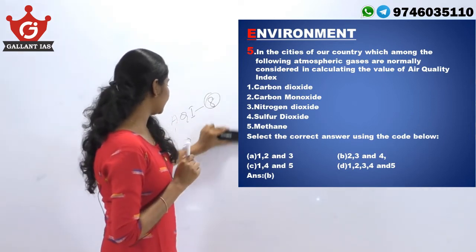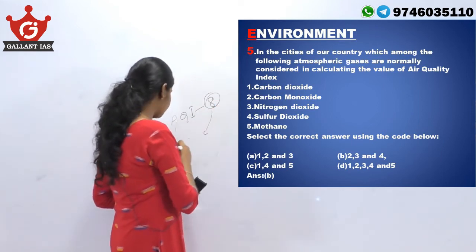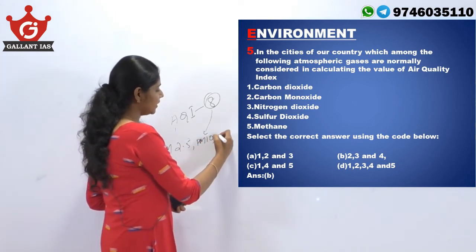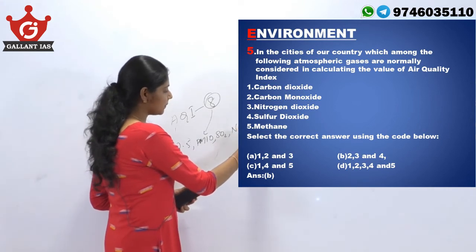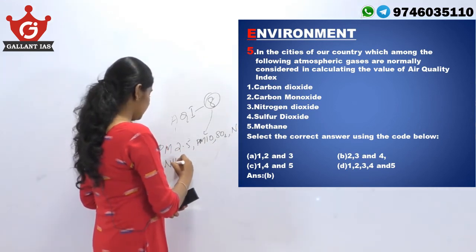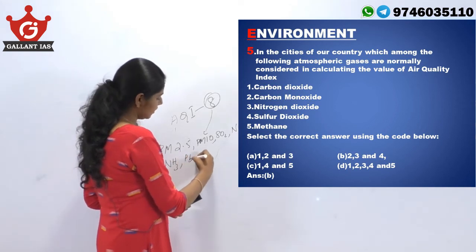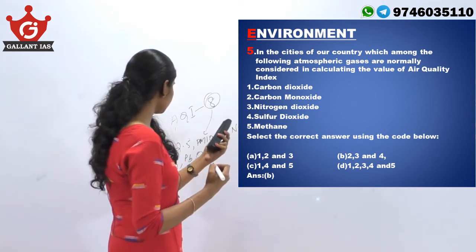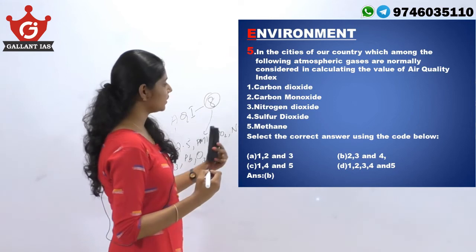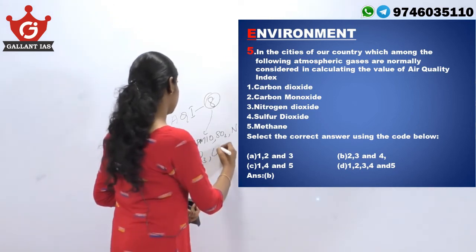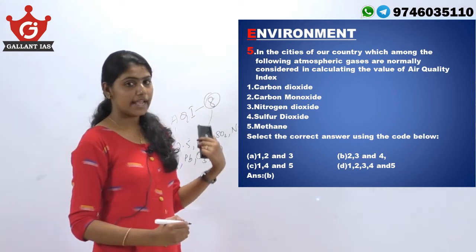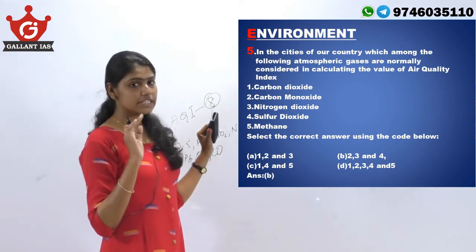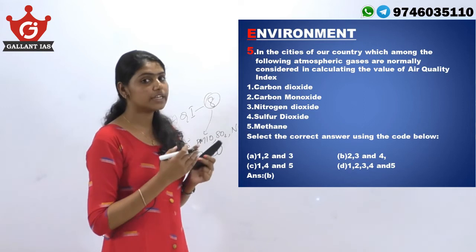The 8 gases used for calculating the Air Quality Index are: PM 2.5 (particulate matter 2.5), PM 10 (particulate matter 10), sulphur dioxide, nitrogen dioxide, ammonia, lead, ozone, and carbon monoxide. Just remember which gases are not included — such as carbon dioxide and methane — so you can easily eliminate the wrong options.